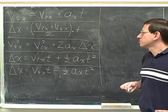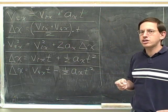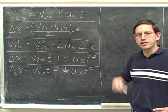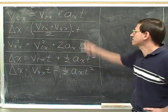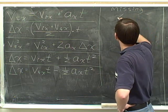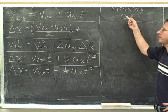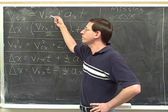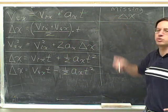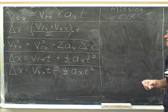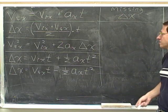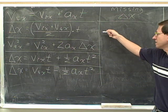One thing that's really useful to notice about each equation is that each of these equations is missing one of the kinematics variables. Remember we already saw all the kinematics variables earlier. Well, each of these is missing one. For example, this equation is missing delta x — displacement. It has four of the kinematics variables, but it's missing displacement. It turns out to be very useful to know what variable each equation is missing. So why don't you pause the video and write down the variable that each of the remaining four equations is missing.